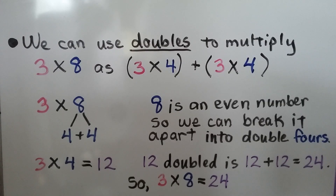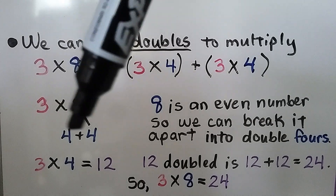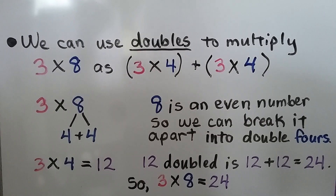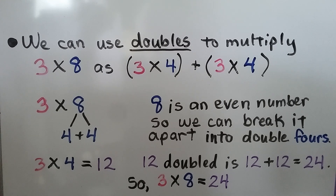We can use doubles to multiply 3 times 8 as 3 times 4 plus 3 times 4. The 8 can be broken apart into a 4 plus 4. Since 8 is an even number, we break it apart into double 4s. And 3 times 4 is equal to 12. We double the 12 — that's 12 plus 12, which is equal to 24. So 3 times 8 is equal to 24.